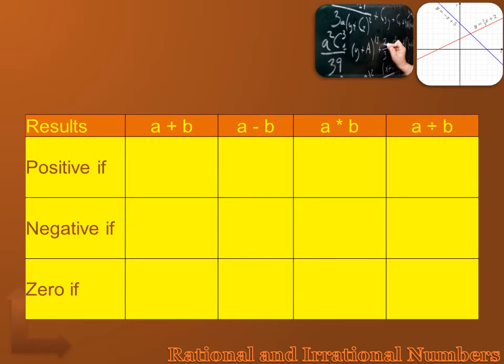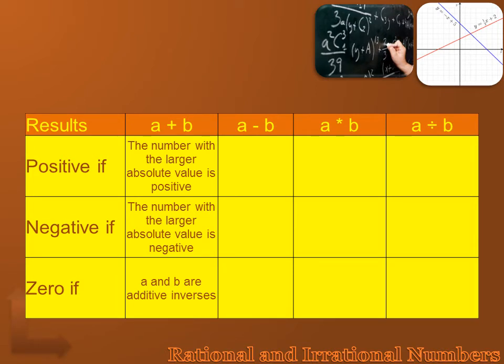Well, let's talk about addition first. What I'm adding, I'm going to get a positive number if the number with the larger absolute value is positive. I'm going to get a negative answer if the number with the larger absolute value is negative. And I'm going to get zero if a and b are additive inverses. Well, let's look at that. I've got six plus minus three. Which number has a higher absolute value, six or minus three? Well, the absolute value of six is six. The absolute value of minus three is three. So, six has a higher absolute value, and six is the positive number. So, when I add six and minus three, because positive six has a higher absolute value, my answer is going to be positive.